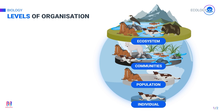The last level is the ecosystem. The ecosystem is the interaction between a living community and the non-living parts of the environment. The abiotic factors may include air, water, sunlight, and land.